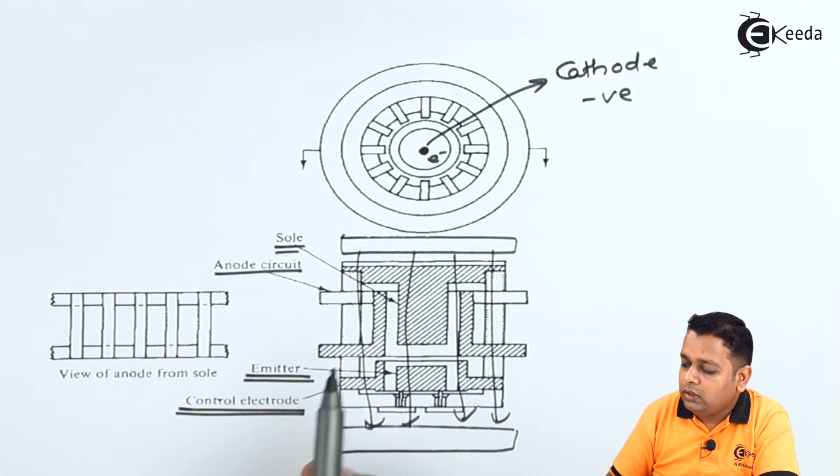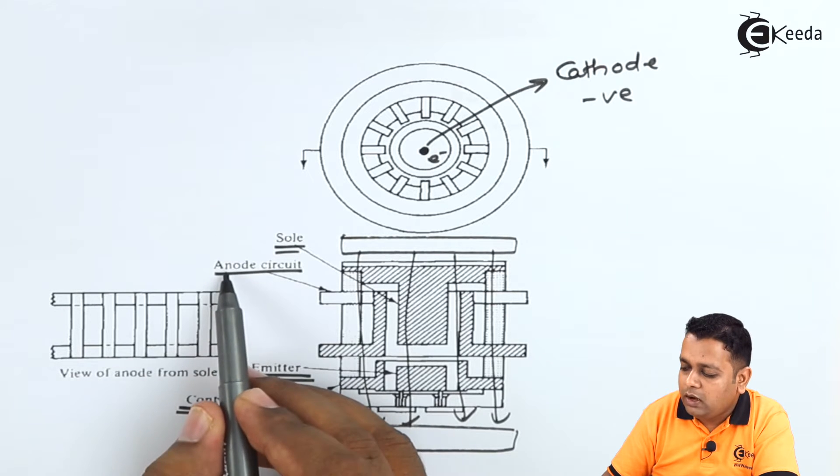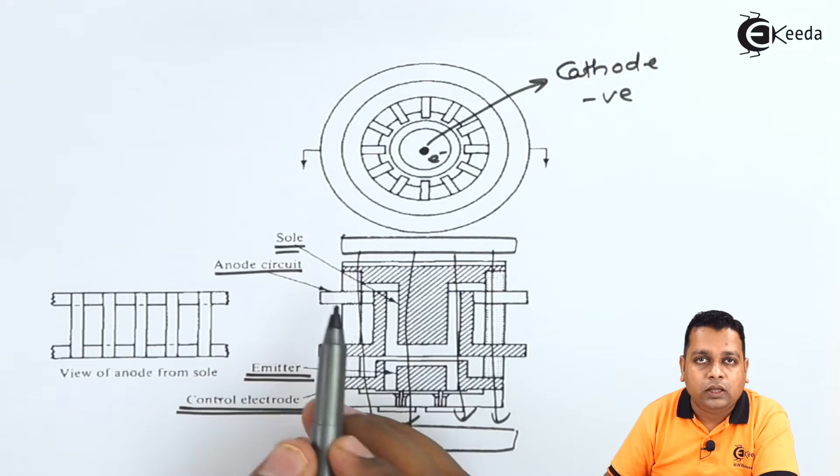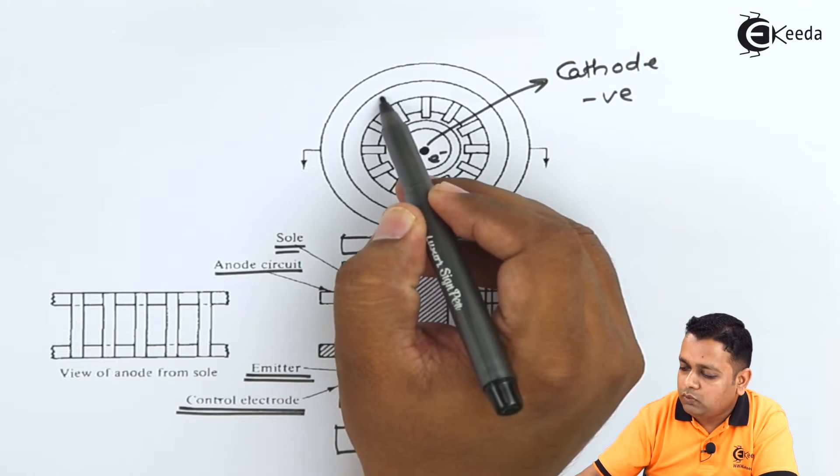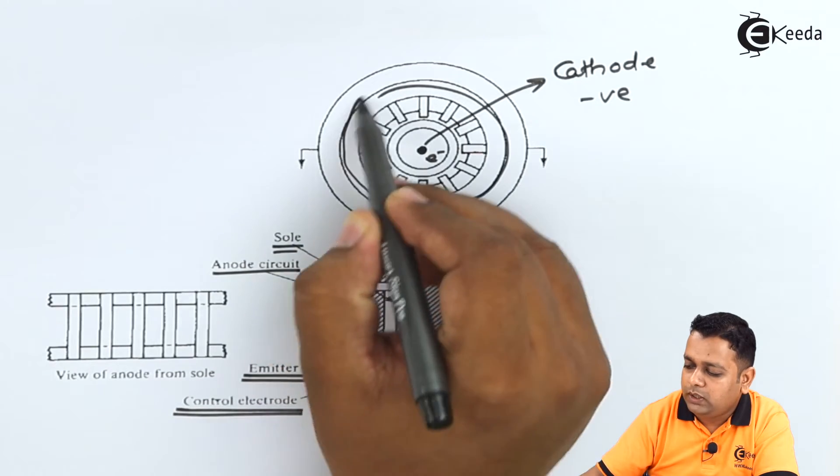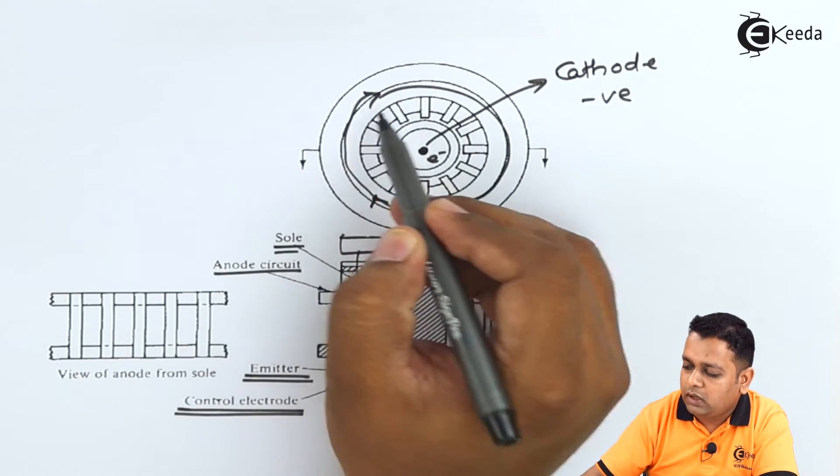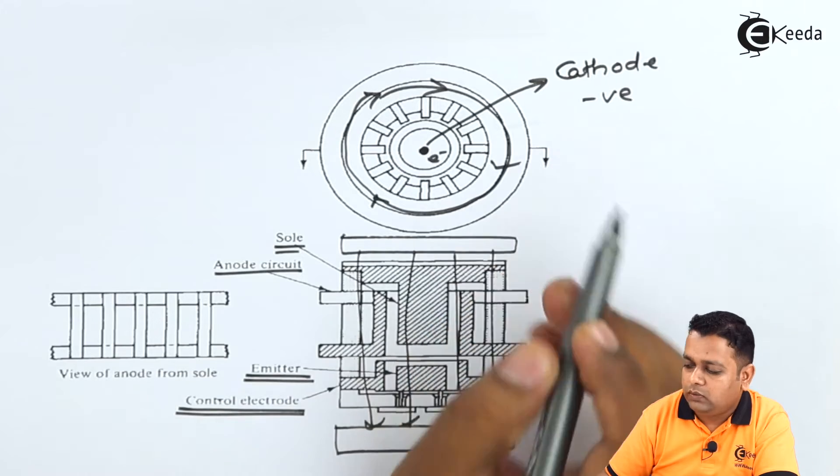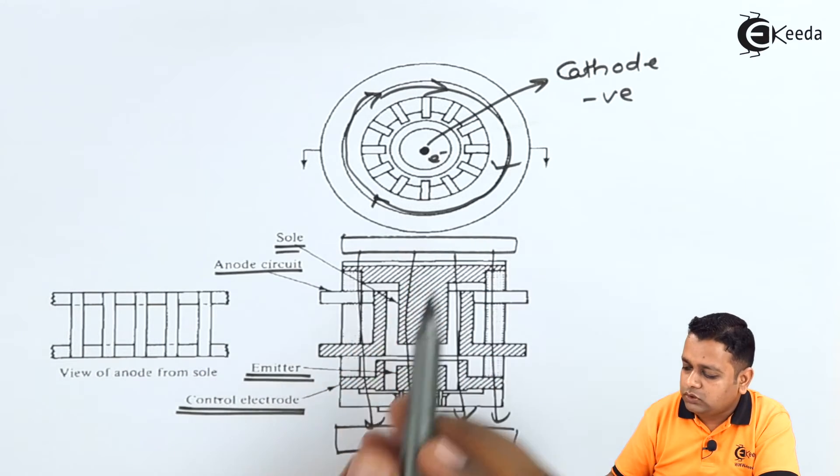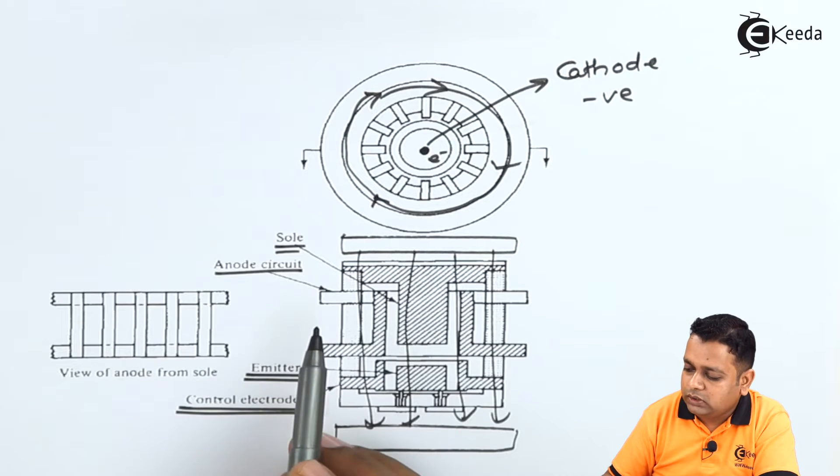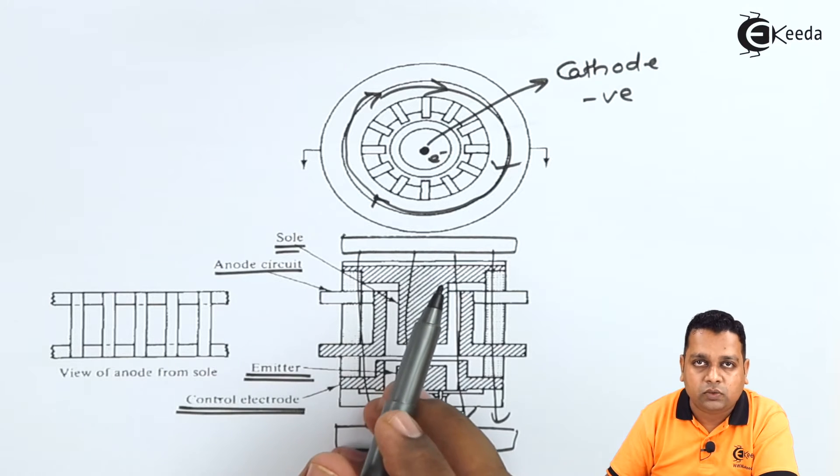Therefore the electrons inside the anode and the sole they will be having a rotating action. So the electrons will be having a circular motion here. So the circulating direction can be given here. So this circulation is controlled because of the control electrodes and the magnetic flux density.